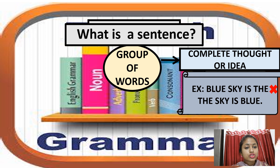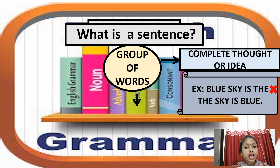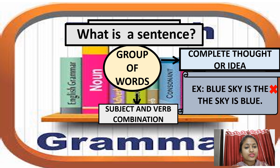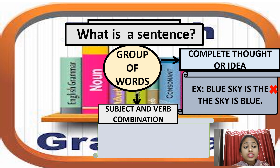Now let's rearrange these words. When we rearrange, it becomes: 'The sky is blue.' Is it making sense now? Yes. It is giving you an idea that the color of the sky is blue. The next component we have already dealt with — that is the subject and verb combination. Without the subject and verb combination, sentence formation is impossible.